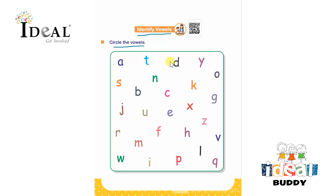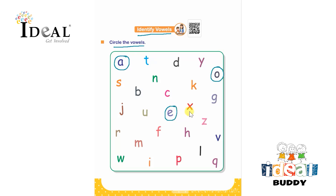They will read the letters one after the other and encircle the vowels. First is A — A is a vowel. Then T, D, Y. O is a vowel. S, B, N, C, K, G, J, U. E is a vowel. X, R, M, F, H, Z, W. I is a vowel. P, L, Q, V.